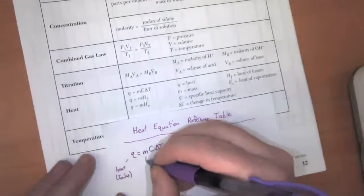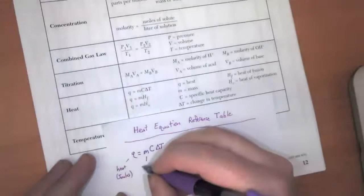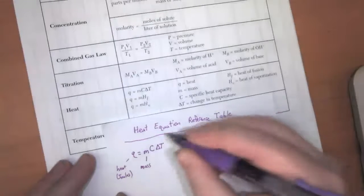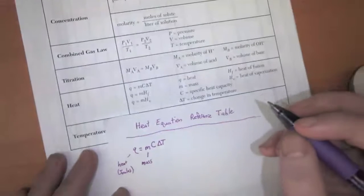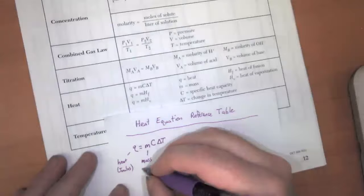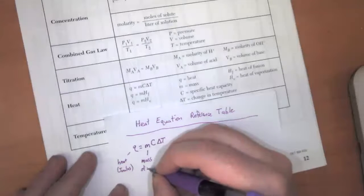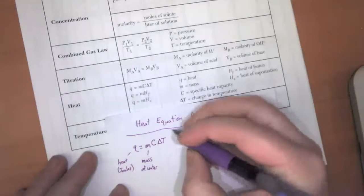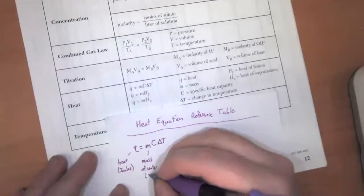We've got M and M is the mass. All of the things we're going to be doing in these problems are going to be about liquid water. So this is the mass of the water and we measure that in grams.